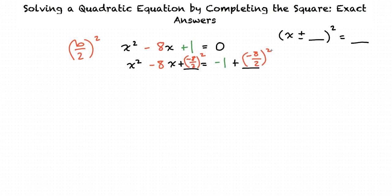What does that number become? Negative 8 over 2 is negative 4, and then negative 4 squared is 16, so we add 16 to both sides. Correct. So now the equation becomes x squared minus 8x plus 16 equals negative 1 plus 16.